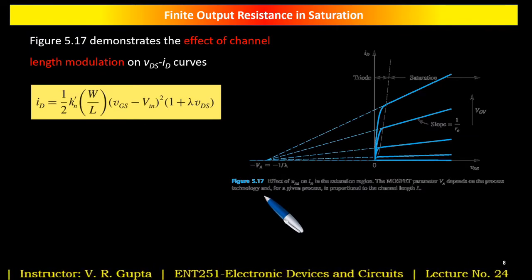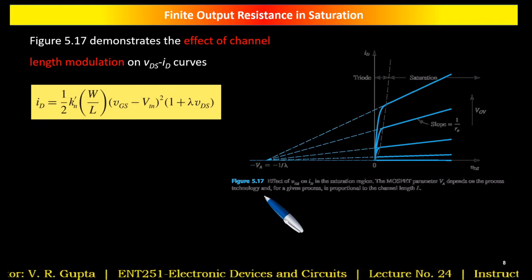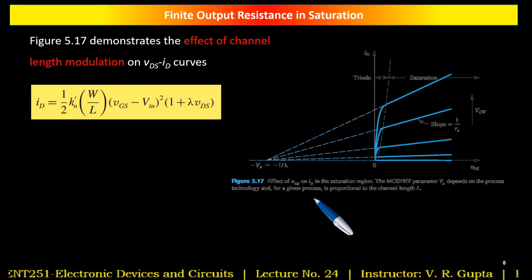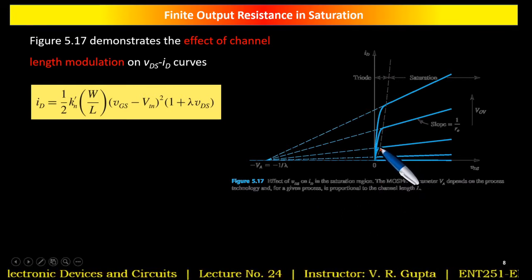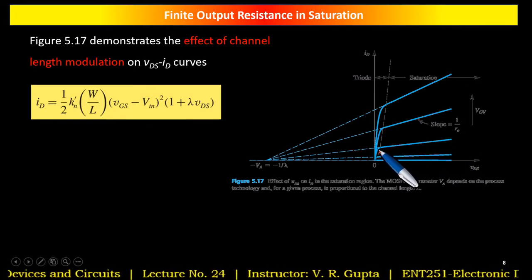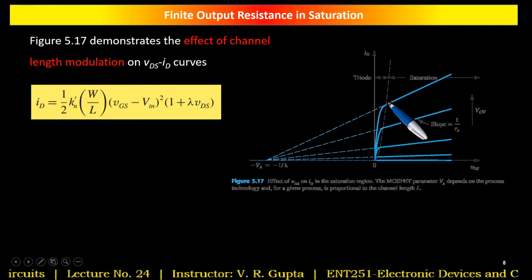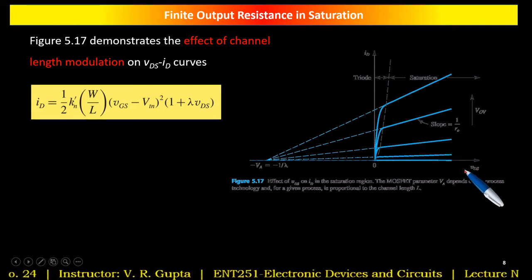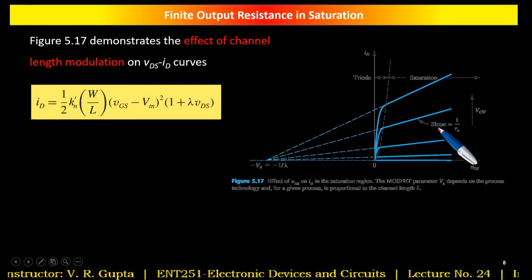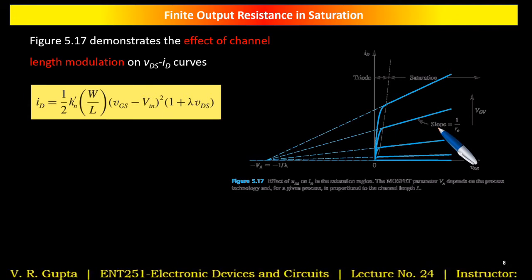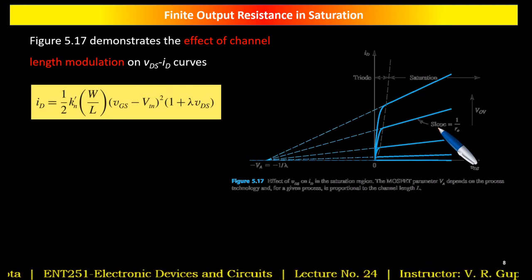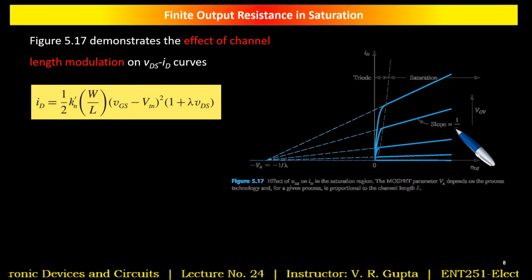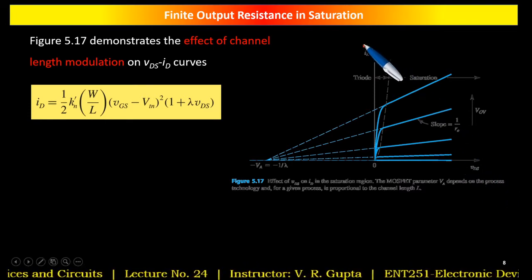The ID vs VDS characteristic curves showing channel length modulation have a finite slope rather than being perfectly horizontal. The slope of each curve is delta-ID / delta-VDS, and since R0 = delta-VDS / delta-ID, the slope equals 1/R0.